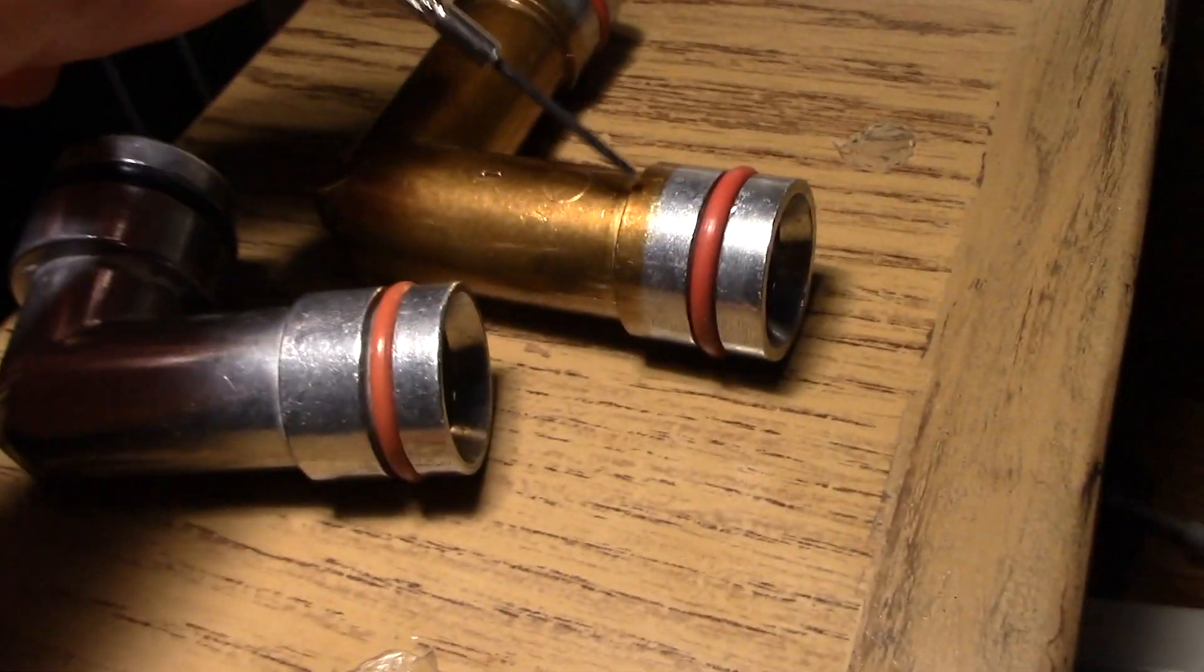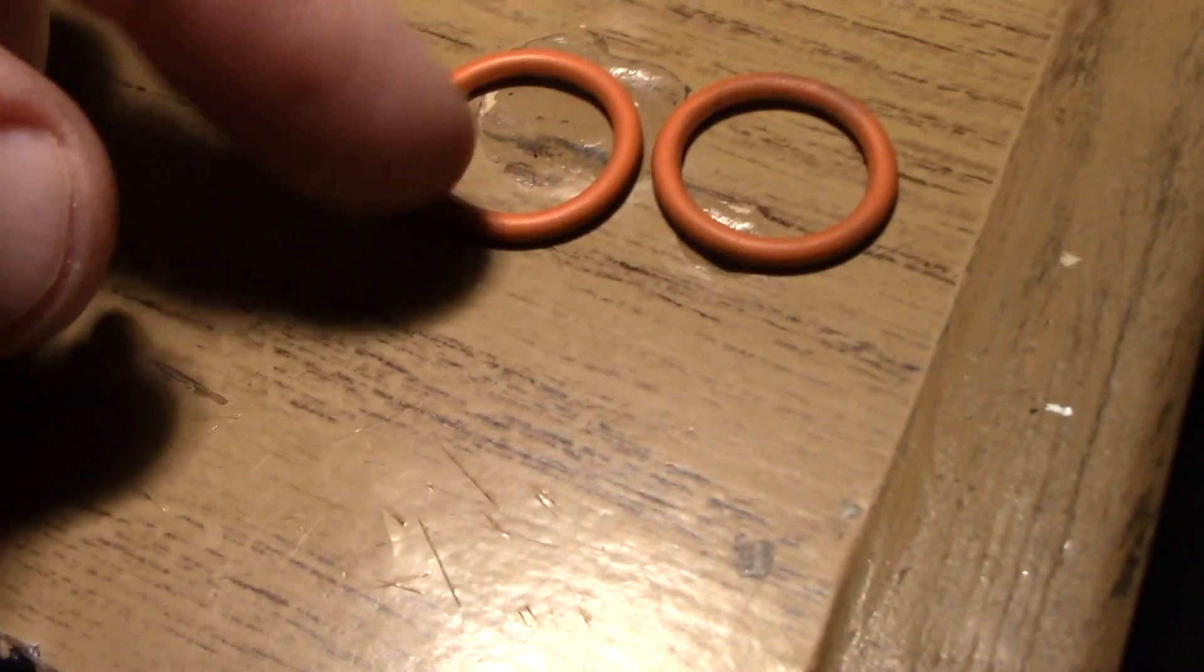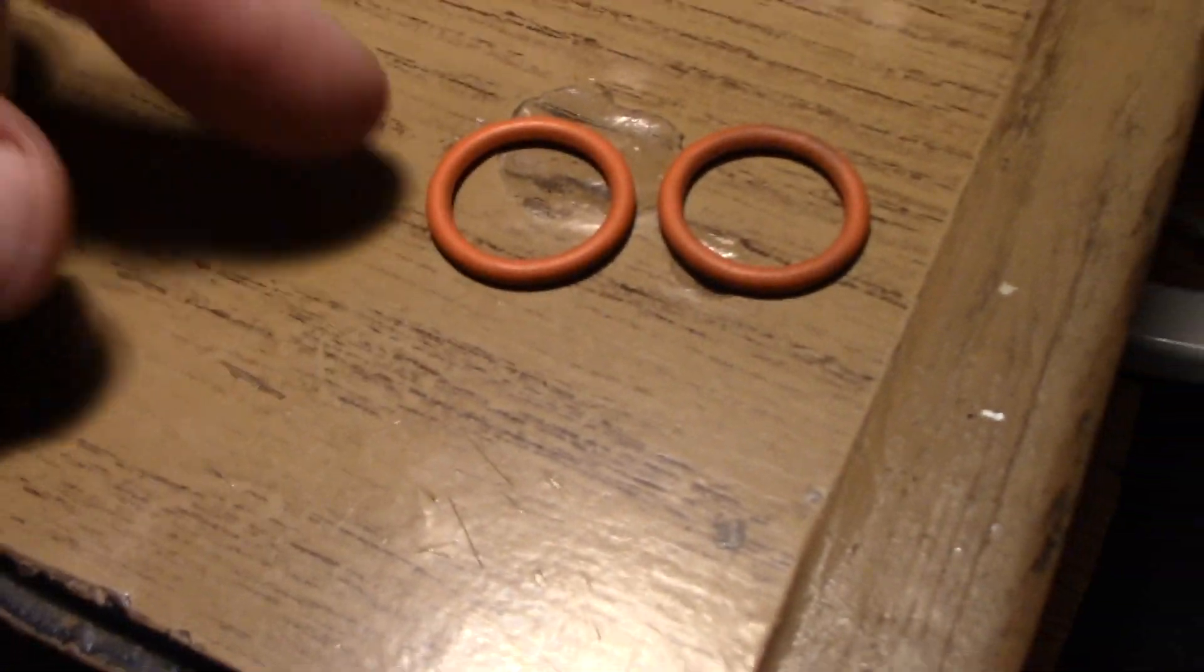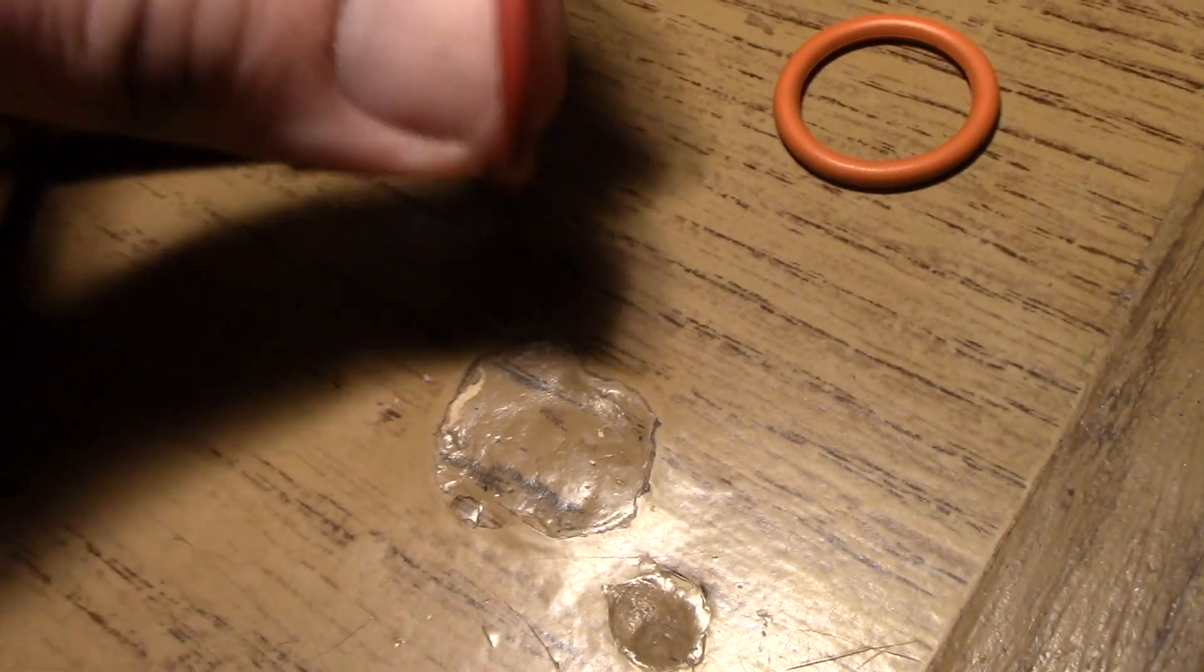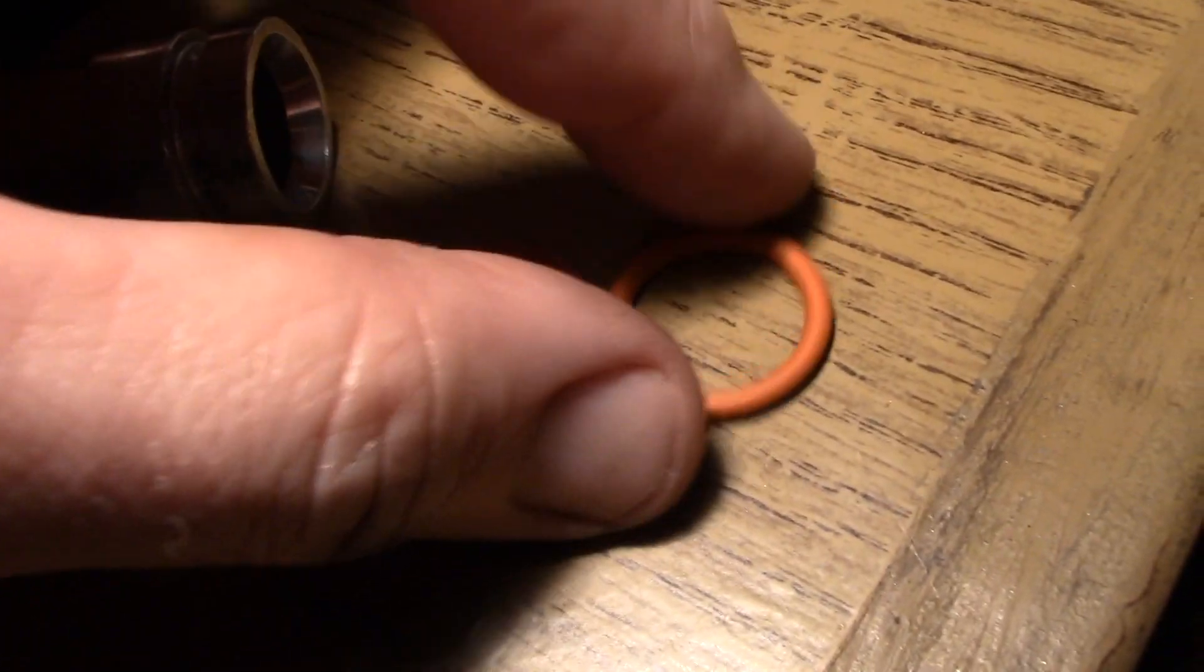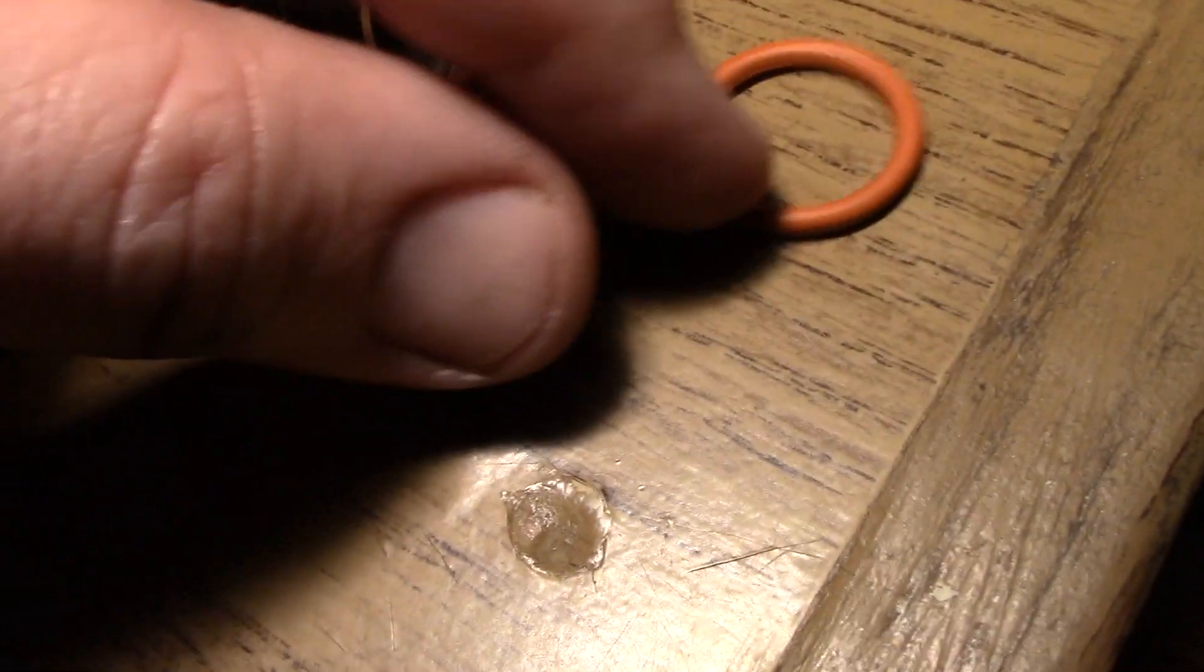So it's pretty easy to do. You just take a little tiny screwdriver, pry it out of the thing and pop in the GM one before you put it together. So here's the Dorman O-ring and here's the GM O-ring.